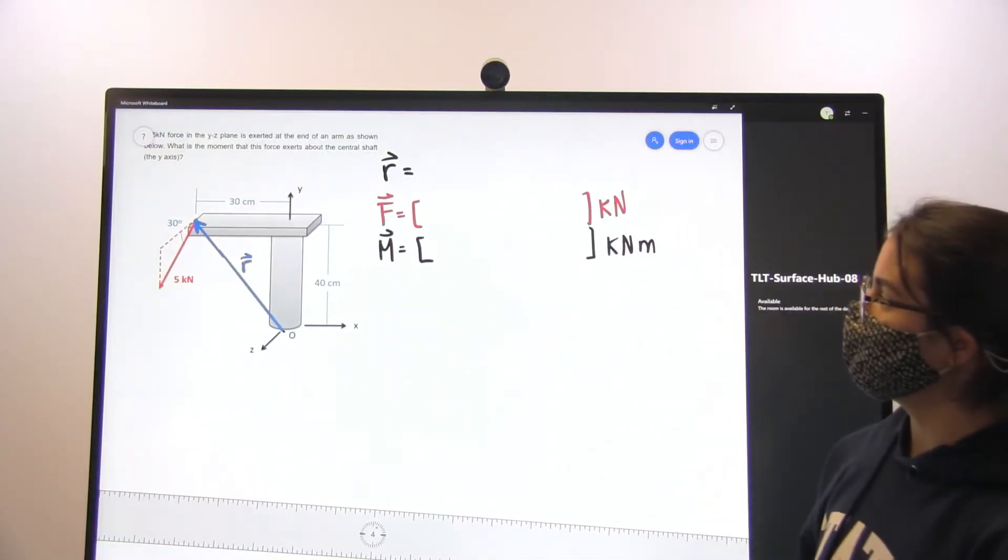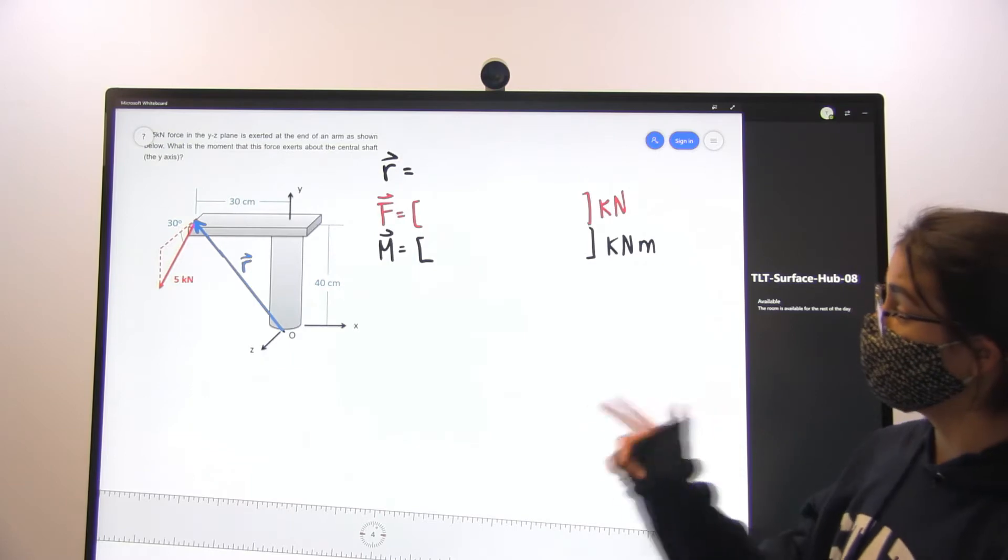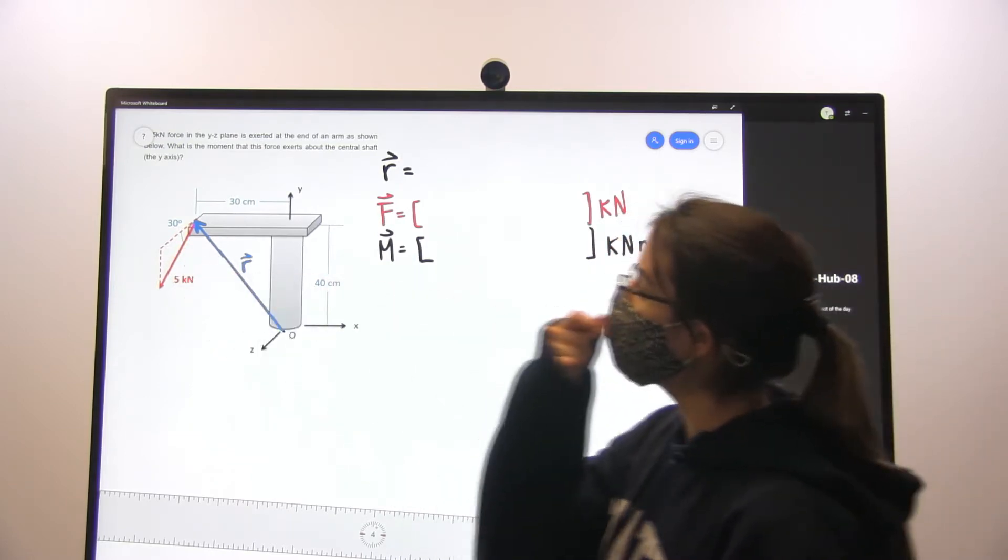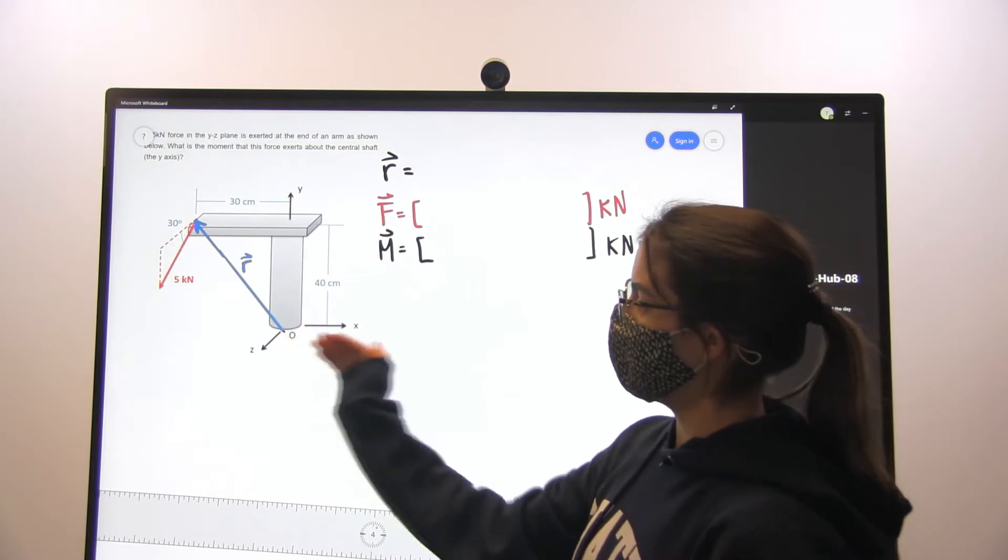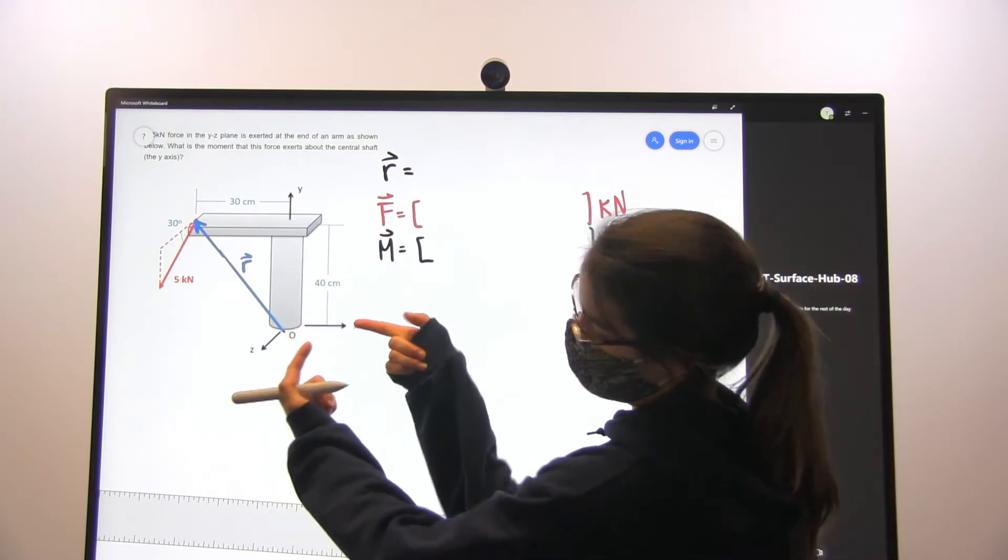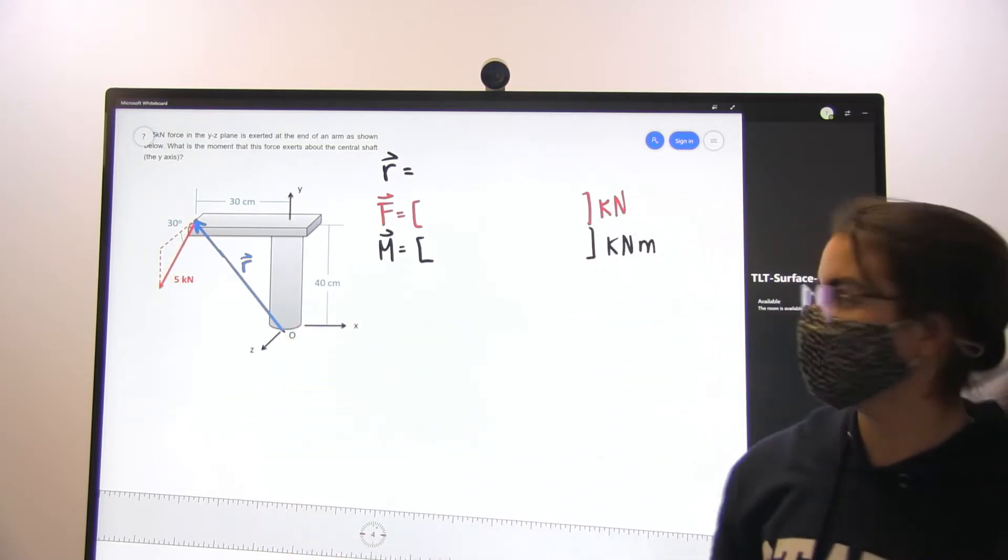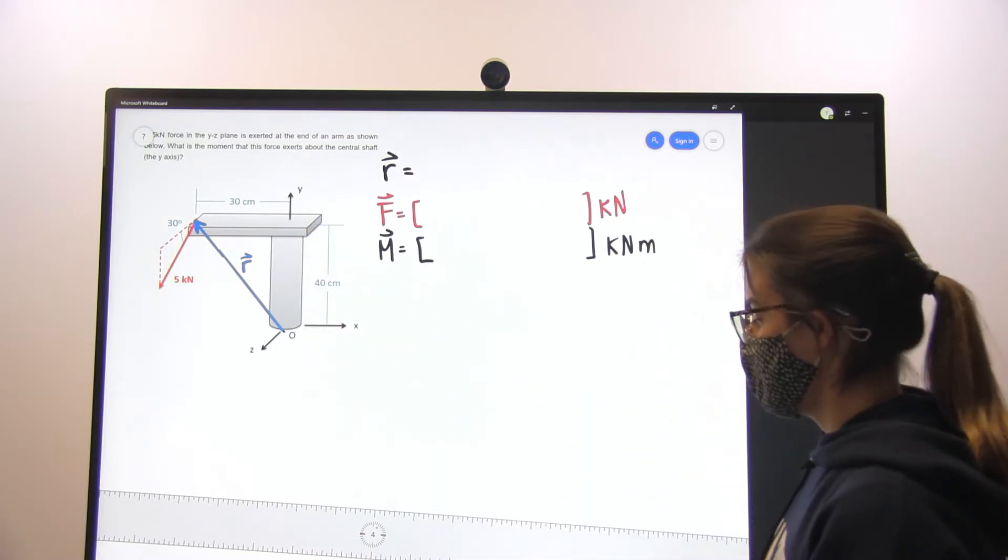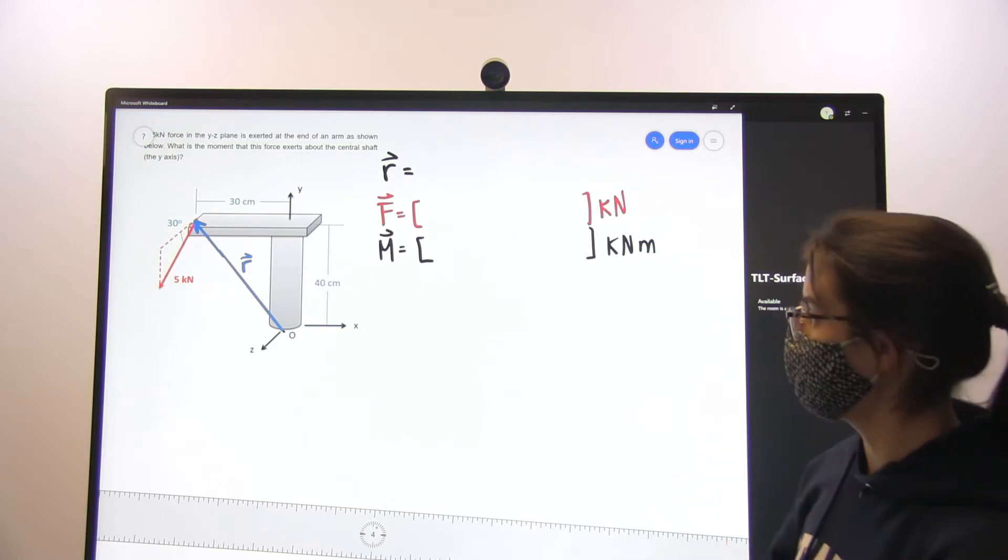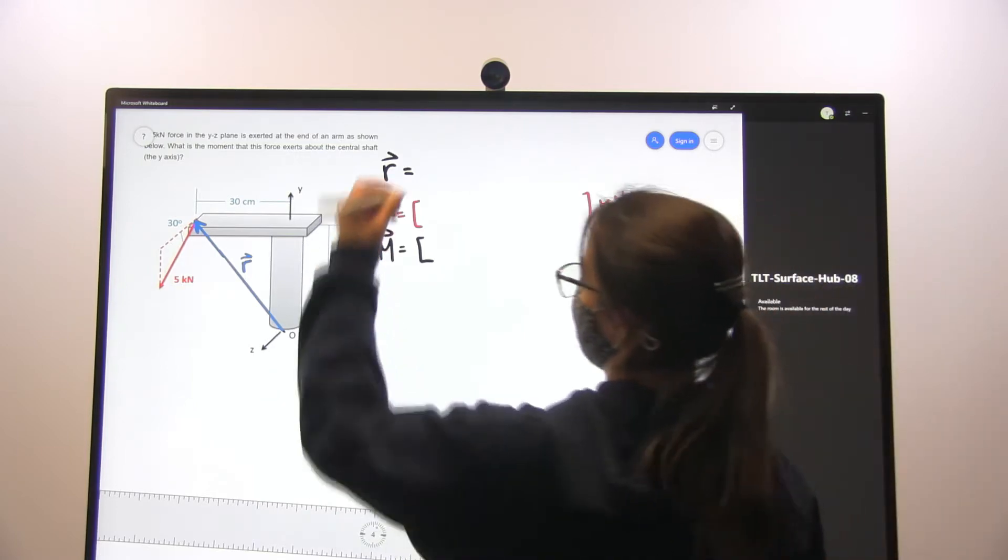So in this problem, we're asked to find the moment that the force being applied in this structure exerts about the central shaft. Looking at the way that the coordinate system was established, the central shaft basically aligns with the y-axis, and so that's going to facilitate our problem as we go about it.